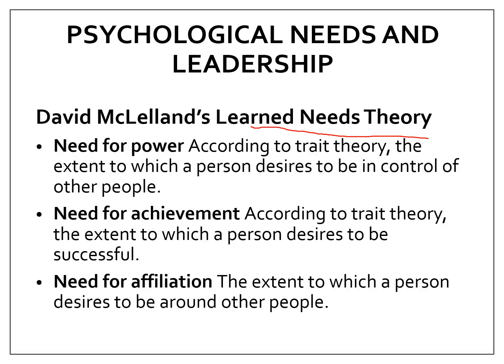The need for power is the desire to be in control of other people. The need for achievement is the desire to be successful. And the need for affiliation is the desire to be influential to others and to be around people you like. Your leadership style will differ depending on which need is most dominant in your personality.